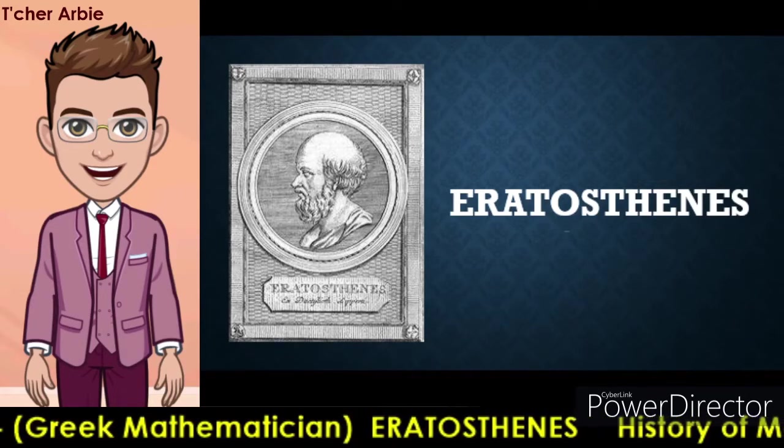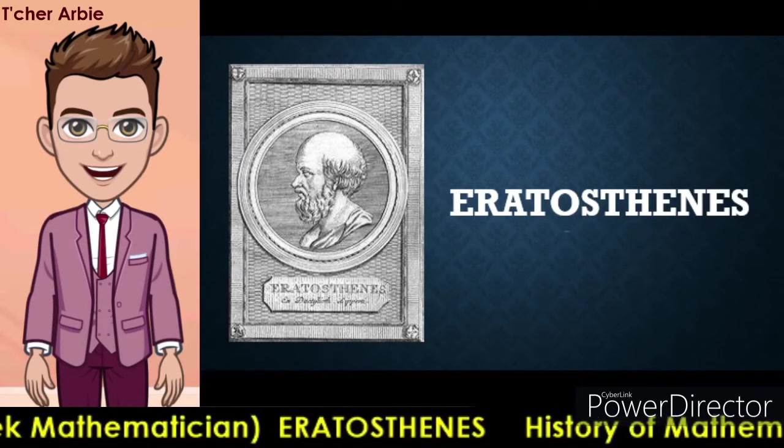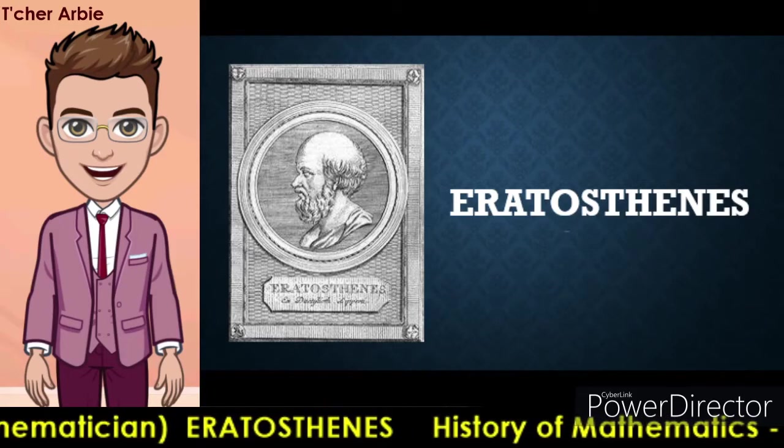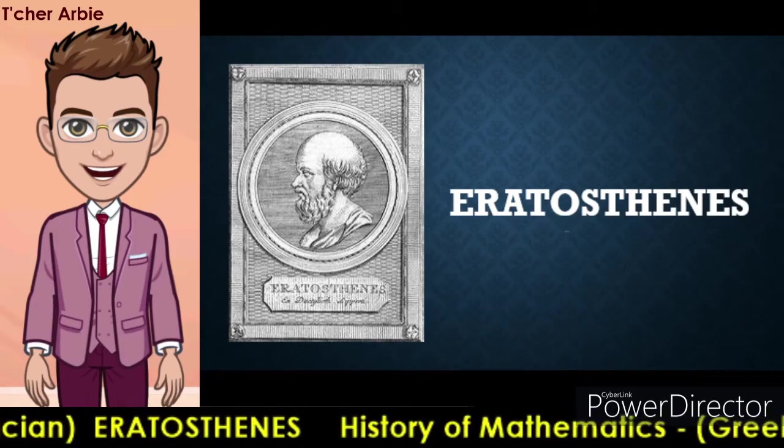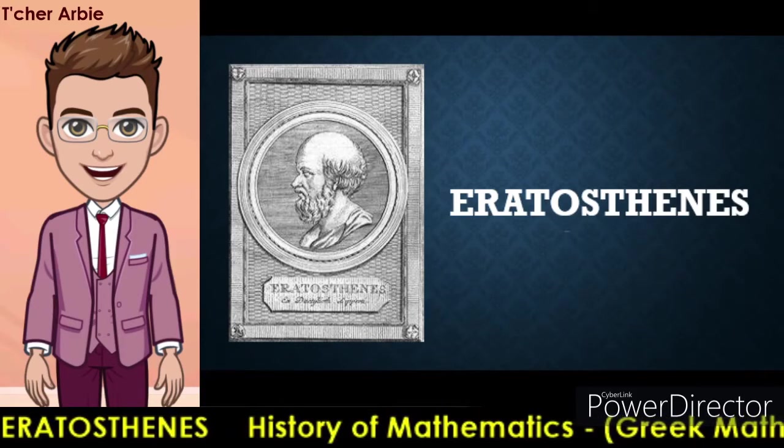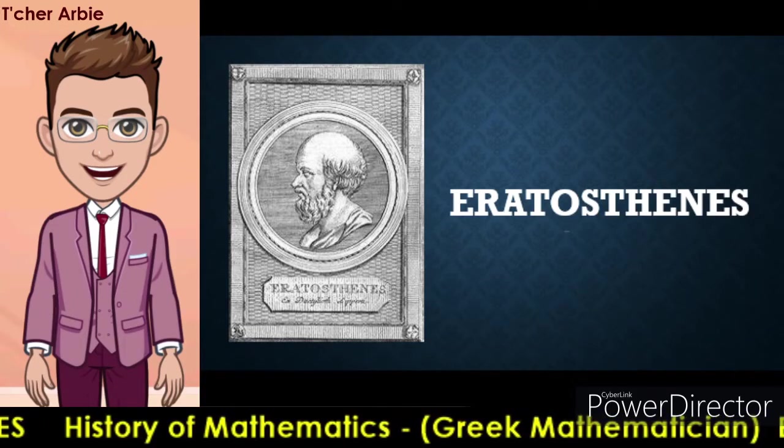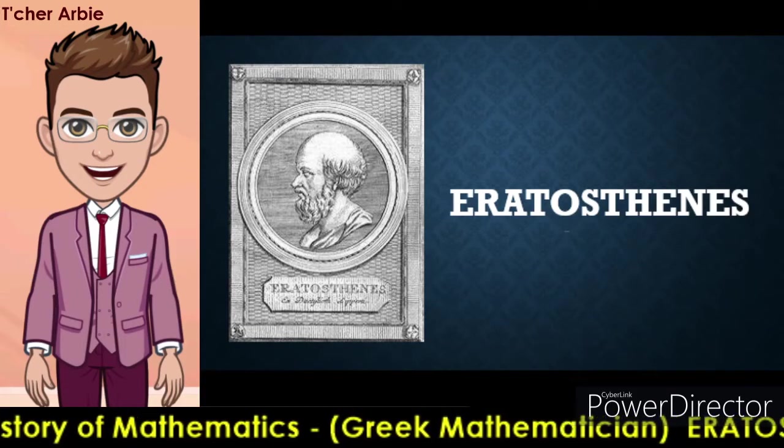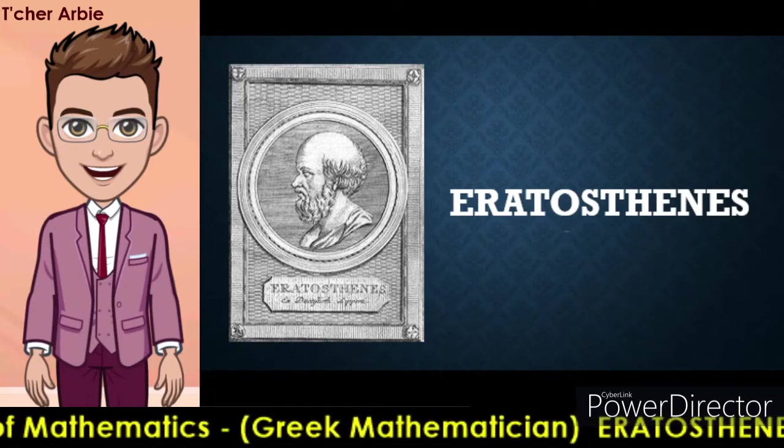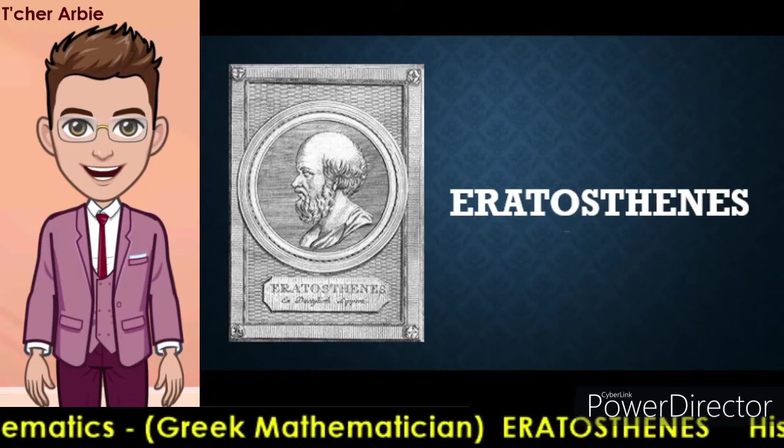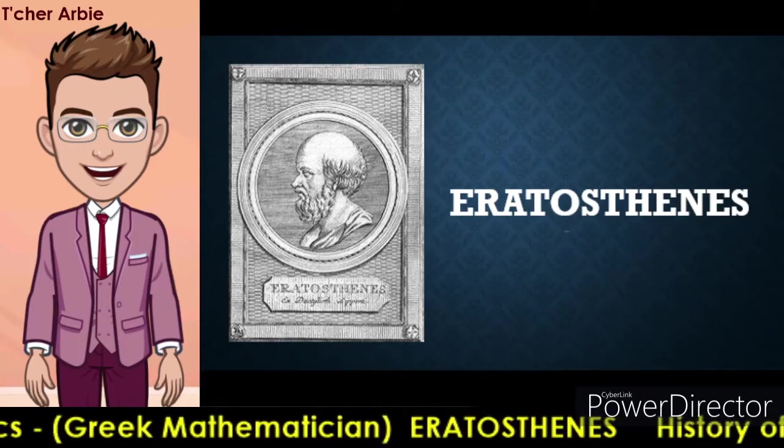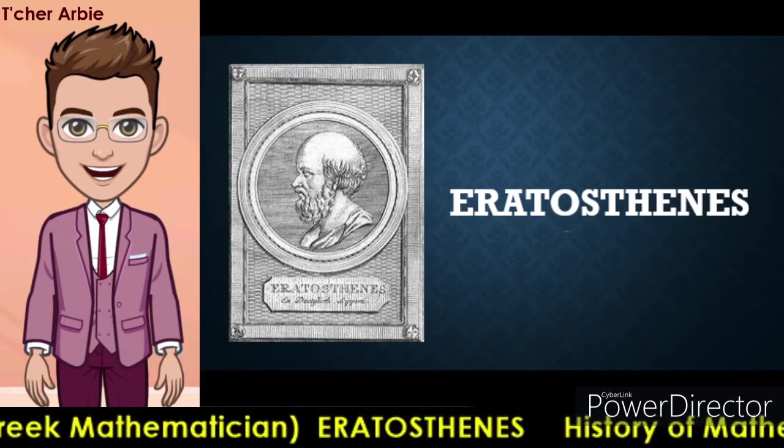His efforts to calculate the circumference of the earth and the distance from the earth to the sun paved the way for our modern understanding of the cosmos. Among his many accomplishments were the creation of the first map of the world and the invention of an algorithm known as the sieve of Eratosthenes, which is used to identify prime numbers.